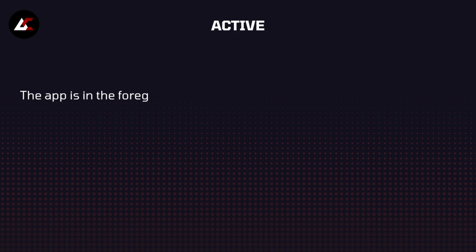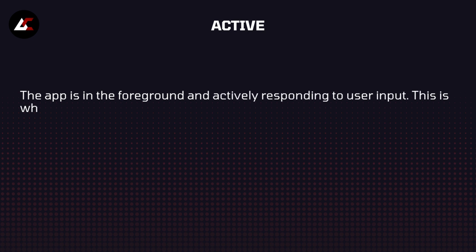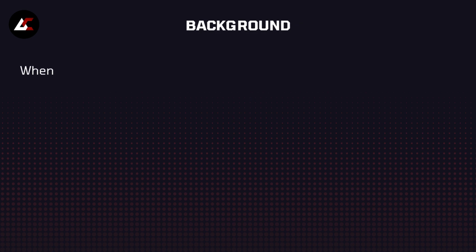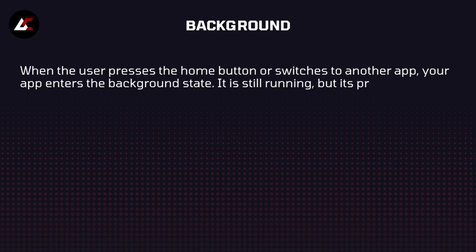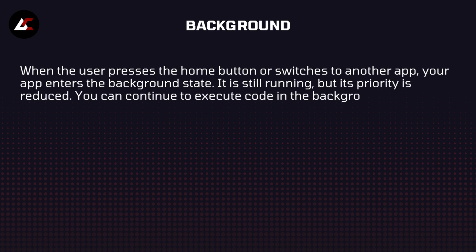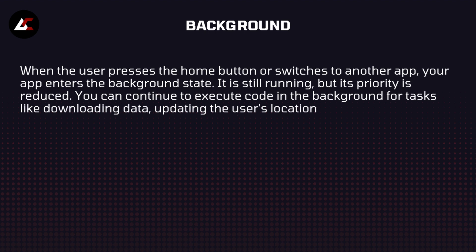Active state — the app is in the foreground and actively responding to user input. This is where your app runs and interacts with the user. Background — when the user presses the home button and switches to another app, your app enters the background state. It is still running but its priority is reduced. You can continue to execute code in the background for tasks like downloading data, updating the user location, and playing audio.